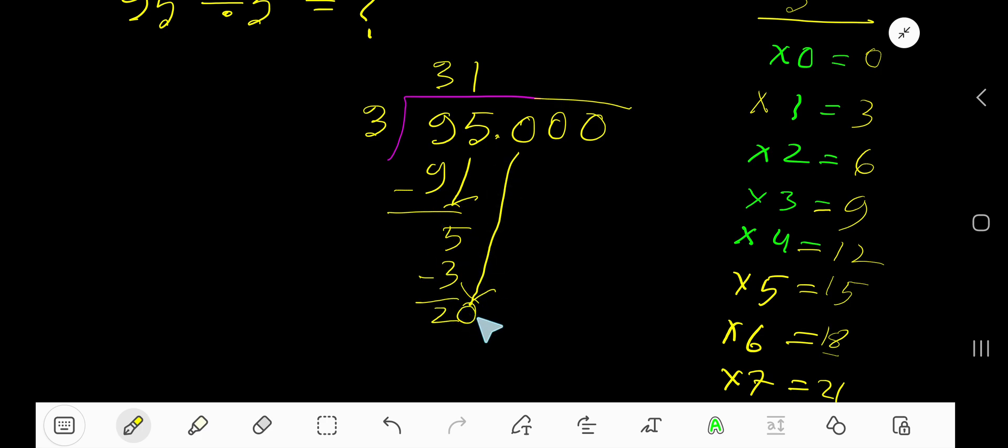3 goes into 20 how many times? 6 times 18. So write 6. But we put this zero. There is a decimal. Decimal must come here. 3 goes into 20 how many times? 6 times. 6 times 3, 18. Subtract 2.